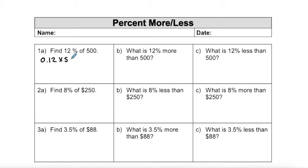So I'm finding 0.12 times 500, and that gives me a value of 60.